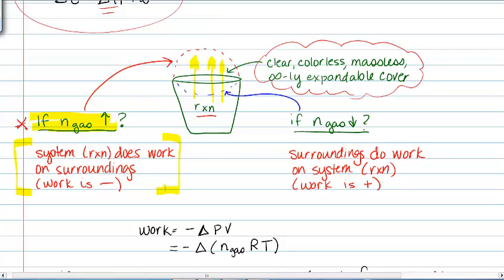That means the system is doing work on the surroundings, so work is negative. If on the flip side, if the number of moles of gas decreases, then it's basically air pressure pushing down on it. And so work will be positive because the surroundings are pushing down on the system. So that's all review.